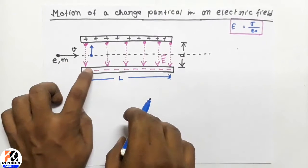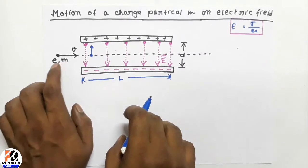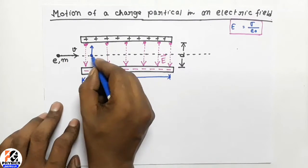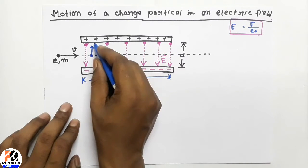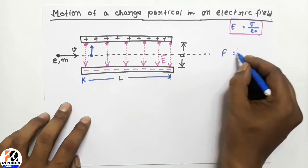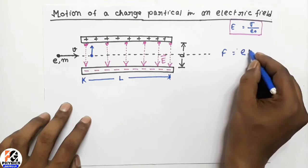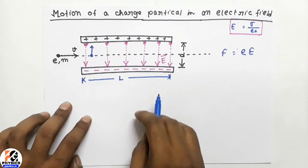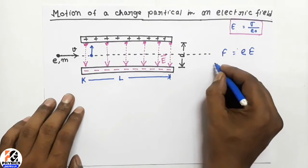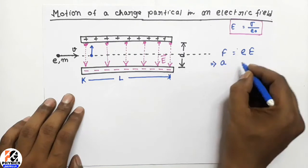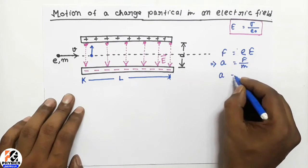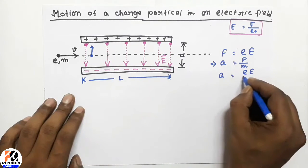Now, as there is an electric field vertically downward and the electron is negatively charged, when the electron enters the electric field it will deflect towards the positive plate — that is, in the opposite direction to the electric field — due to the force F equal to electronic charge times the magnitude of electric field. So its acceleration A equals total force divided by its mass, giving acceleration equal to eE by m.